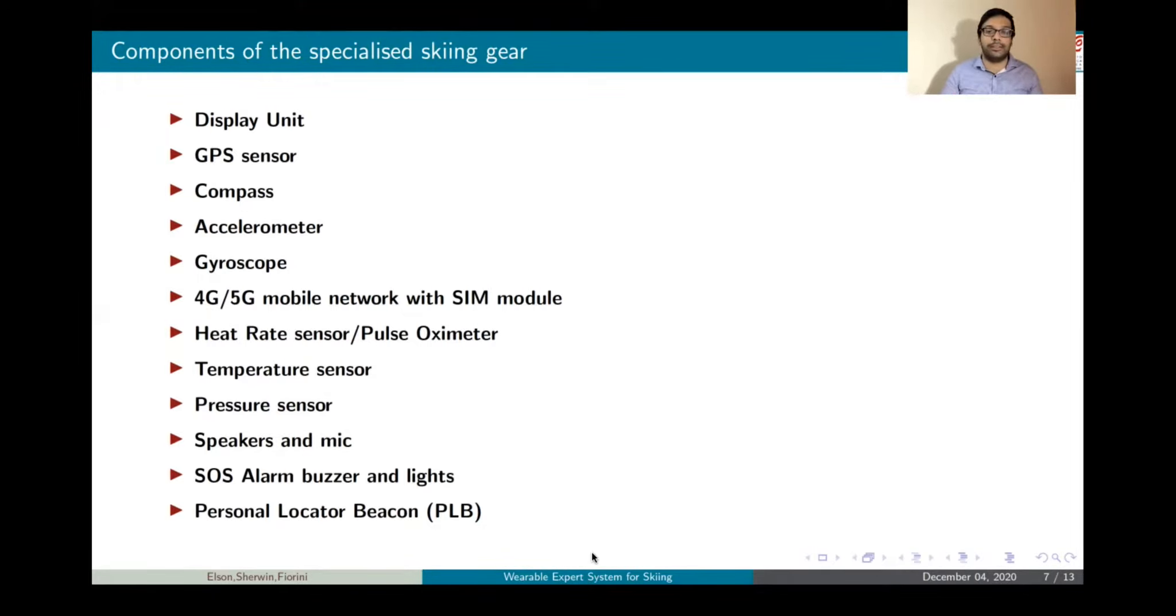We also have a heart rate sensor and pulse oximeter. The heart rate sensor measures the heart rate of the skier, also the oxygen levels. We also have a temperature sensor, pressure sensor, speakers and mic. Speakers and mic are very essential in case of any natural disaster or accident. If a mishap occurs, the skier can always use the speakers and mic to communicate directly with the emergency system and the disaster rescue team so they can locate the skier. We also have SOS alarms and lights that go off in case of an SOS emergency. So if there are people nearby, they can identify the lights or by the SOS alarm and can help the skier get back to safety.